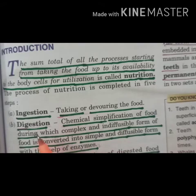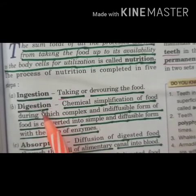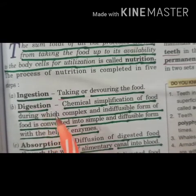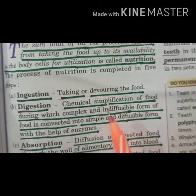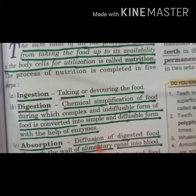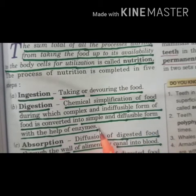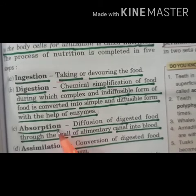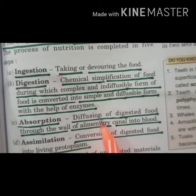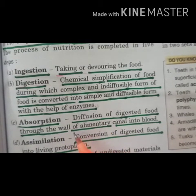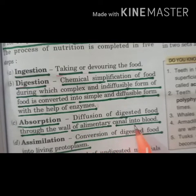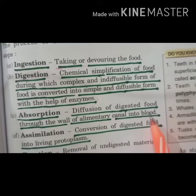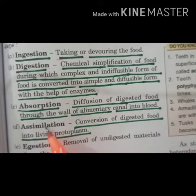The process of nutrition is completed in five steps. First is ingestion, meaning taking in food. Second is digestion, meaning the conversion of complex and non-diffusible forms of food into simple and diffusible forms with the help of enzymes. Third is absorption — the food which is digested is absorbed by the wall of the alimentary canal and then diffused into the blood.